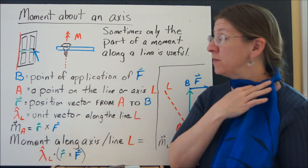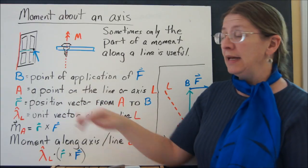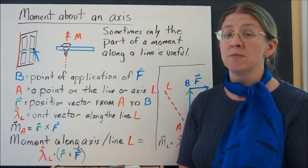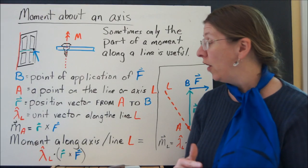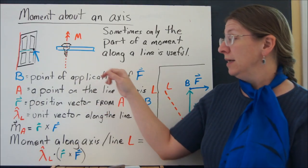Let's define some terms. Let B be the point of application of your force. A is a point on the line—it doesn't matter what point you pick, just a point on that line. R is the position vector from A to B.